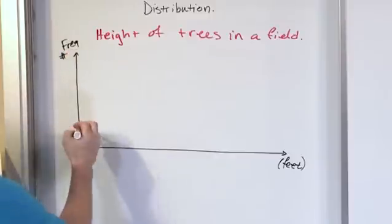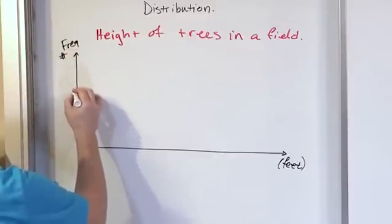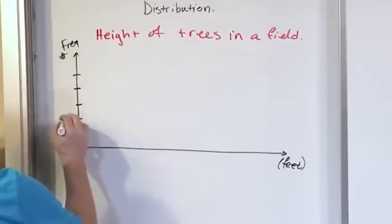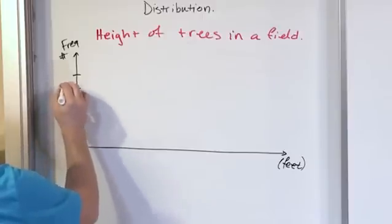And I have to have some kind of scale here so I have 2, 4, 6, 8, 10. And I'll label it 2, 4, 6, 8, 10.